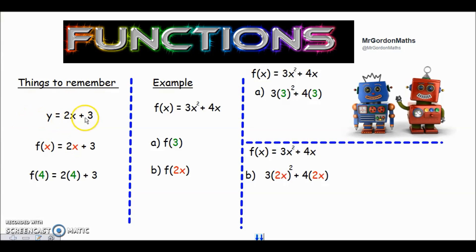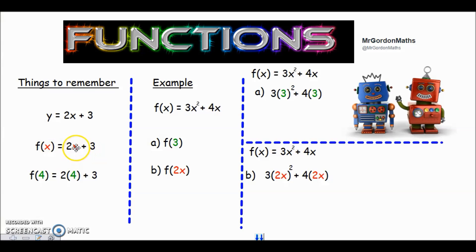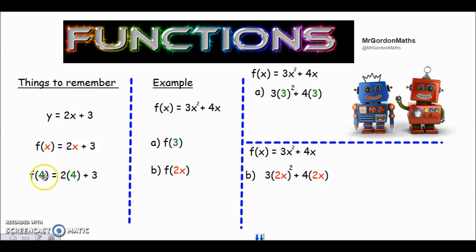Remember: the old GCSE style used y, and f(x) simply replaces that y value. When we put x values in, f(x) is telling you that whatever your input is, you place it where the red x is within the function itself. So if your x value is four, it says f(4) and you put the number four wherever you see an x in your function. With our example, you'd do two times four plus three and get eleven — just like before.